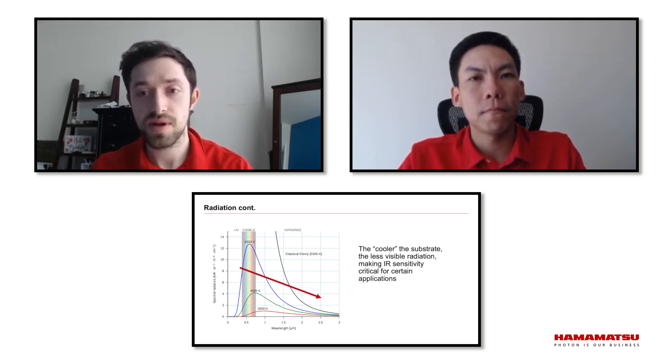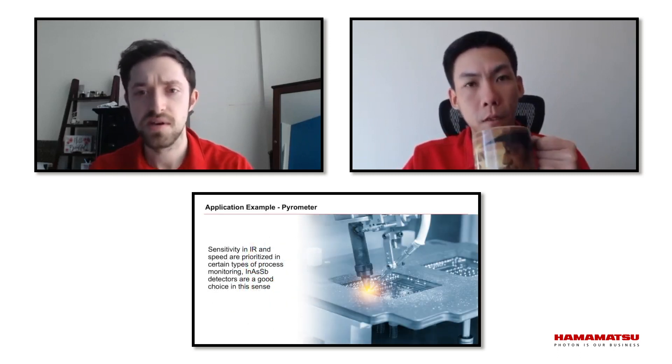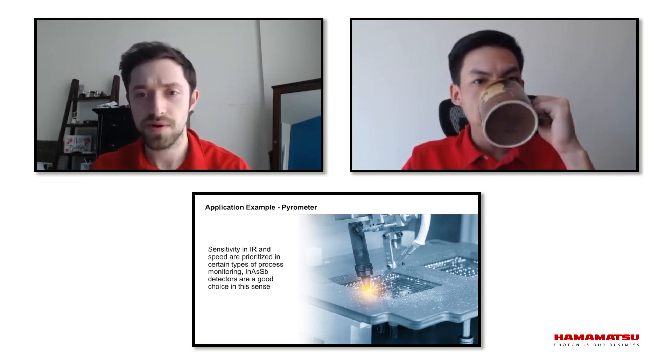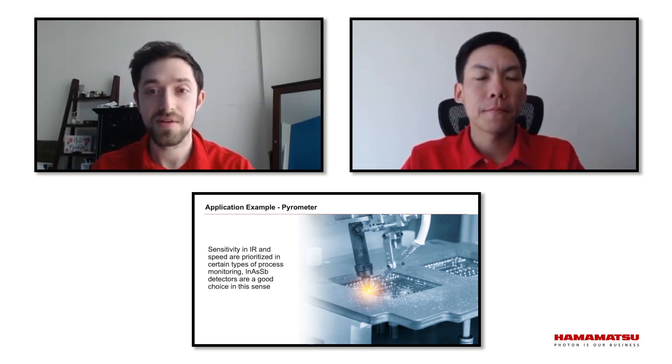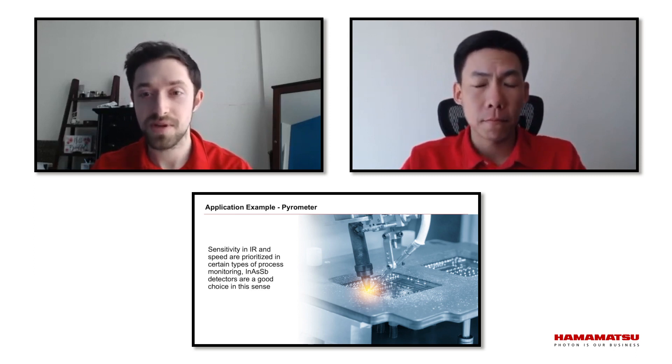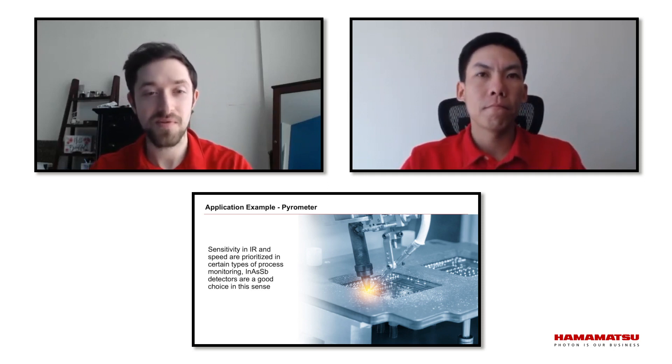Mid-infrared is also a very popular choice for the same reasons. This is where InAsSb, indium arsenic antimonide, comes in. Blazing fast speed, high shunt resistance. It's a great choice for pyrometers and similar instruments. However, it is difficult, not to mention costly in developing, to make a camera that has mid-infrared sensitive material. Fortunately, there's many options for the shortwave infrared camera. Right, Albert?